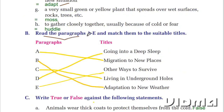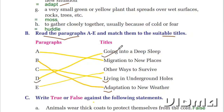Read the paragraphs A to E and match them to the suitable titles. Paragraph A: Migration to new places. Paragraph B: Adaptation to new weather. Paragraph C: Living in underground holes. Paragraph D: Going into a deep sleep. Paragraph E: Other ways to survive.